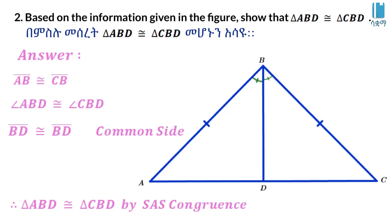So, going to the triangle — therefore, triangle ABD is congruent to triangle CBD.